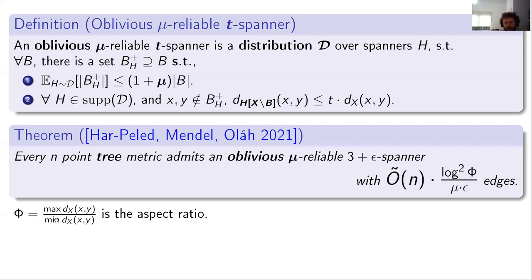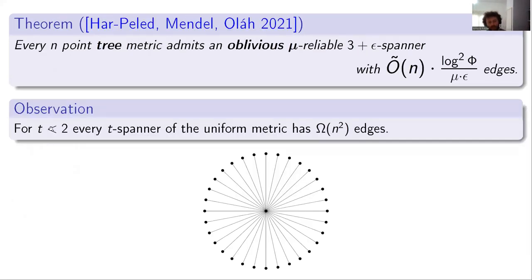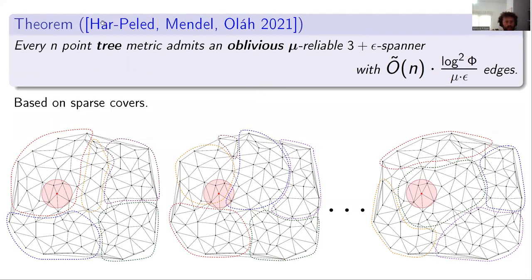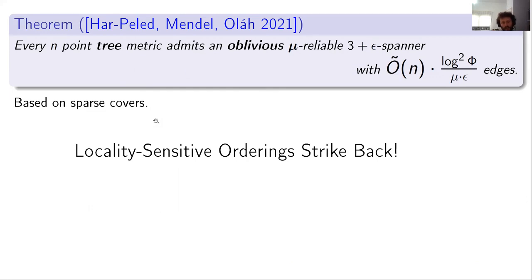Har-Peled, Mendel, and Ola showed that for trees one can construct an oblivious reliable (3+epsilon)-spanner with essentially linear times log-squared of phi edges, where phi is the aspect ratio — the ratio between the maximum and minimum distances. This is somewhat a caveat because the aspect ratio can be unbounded. There is also a gap: for stretch below two, every T-spanner of the uniform metric must have a quadratic number of edges even without any reliability requirements, so getting below two requires quadratic edges, but their result achieves three plus epsilon. Our idea is to go through LSOs — reducing to lines rather than uniform metrics — which allows better spanners.